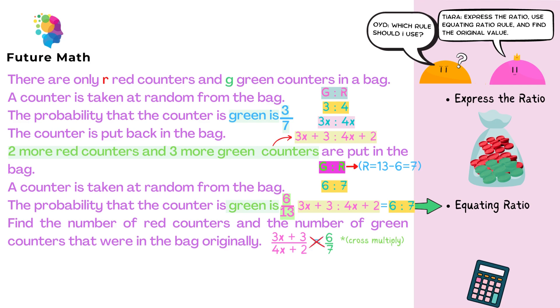Now we just cross multiply, and we get 7 lots of 3x plus 3 equal to 6 lots of 4x plus 2. And then we expand the brackets on both sides and solve for x. So we get x equal to 3.